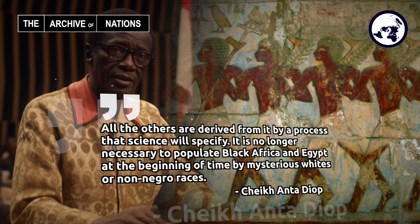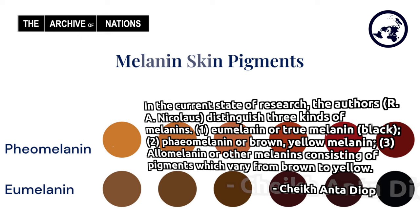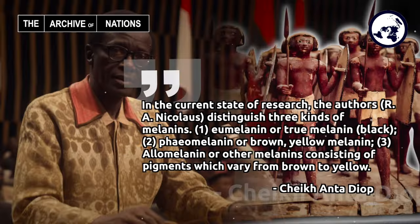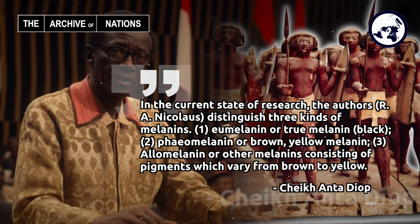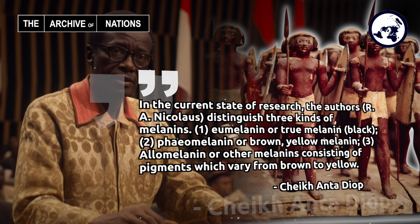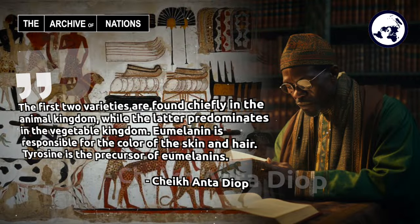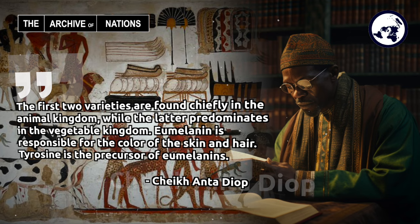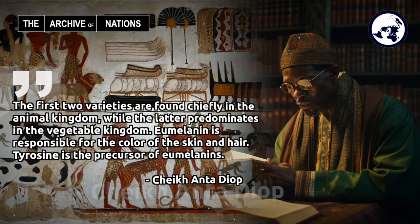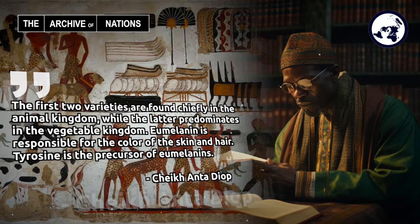It is no longer necessary to populate Black Africa and Egypt at the beginning of time by mysterious whites or non-Negro races. In the current state of research, the authors R.A. Nicholas distinguished three kinds of melanins: one, eumelanin or true melanin — black; two, pheomelanin or brown-yellow melanin; three, allomelanin or other melanins, consisting of pigments which vary from brown to yellow. The first two varieties are found chiefly in the animal kingdom, while the latter predominates in the vegetable kingdom. Eumelanin is responsible for the color of the skin and hair; tyrosine is the precursor of eumelanins.